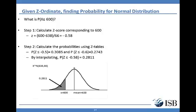The first step is to convert the normal random variable X into the corresponding Z value. Here, Z equals 600 minus 638 divided by 66, which is minus 0.58. We are not going to be afraid of negative Z values. You just need to go to the Z table at the back of the book. You have the value corresponding to minus 0.6. You can take that value as the approximate probability — the required probability will be 0.2743.